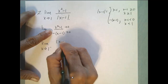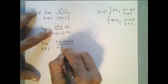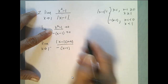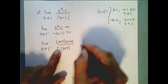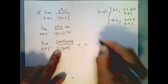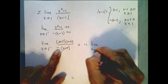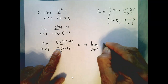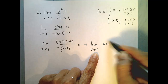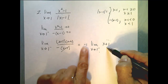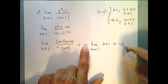Taking the limit as x goes to 1 from the left: the top is a difference of two squares, and the bottom is negative x minus 1. I can cancel those factors, leaving x plus 1 divided by negative 1. Pulling out the negative, I take the limit as x goes to 1 from the left of x plus 1. Plugging in 1 gives 2, times negative 1 gives minus 2.